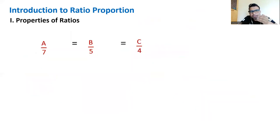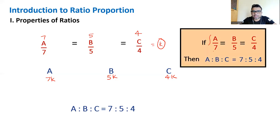Some properties, some situations, some shortcuts. If you are given something like this: A by 7 equal to B by 5 equal to C by 4, what should be the ratio of A to B to C? In school we should do it like this: let all of them be equal to K. So A is 7K, B is 5K, C is 4K. And if you reduce it further in the ratio, K will get canceled, so ultimately 7 is to 5 to 4.